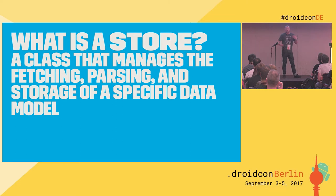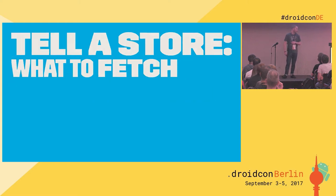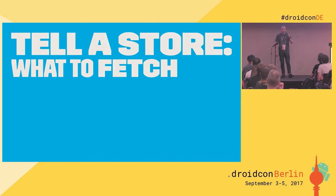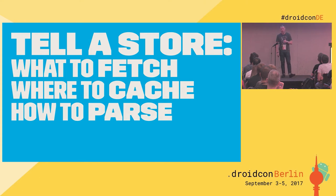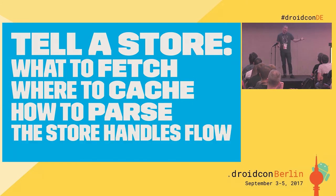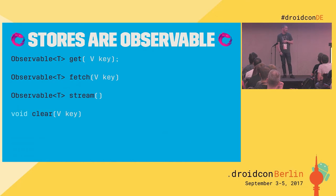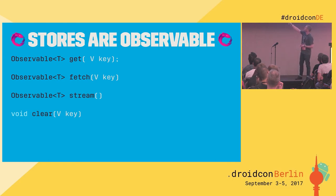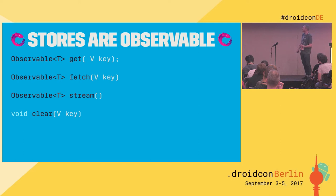So what is a Store? It's a class that manages the fetching, parsing, and storage of a specific data type. All we really want to do is tell a store what to fetch, where to cache, and how to parse — and it should be that simple. The store should handle the flow and be observable. A 'get' means we don't care about freshness; a 'fetch' means we want fresh data; and 'stream' lets us listen for updates and get notified of new data.